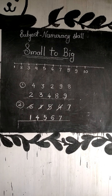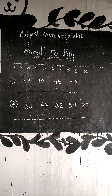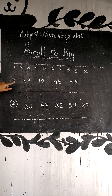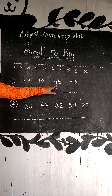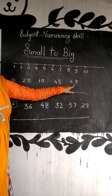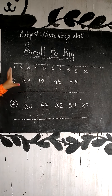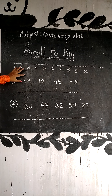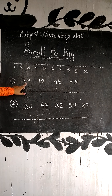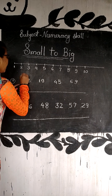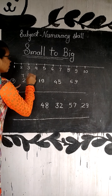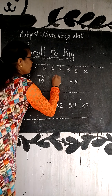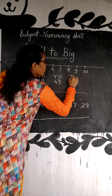But students, do we use the number scale every time? No. So dear students, if we have a double digit number, then we can identify the tens and ones. Now dear students, this is how we use tens and ones to arrange small to big numbers easily.